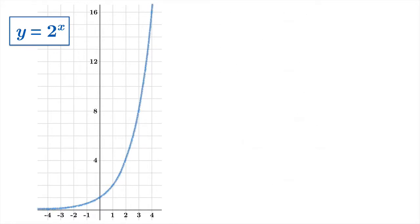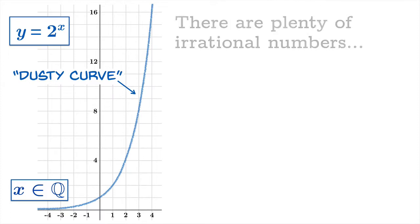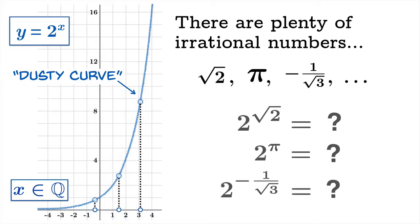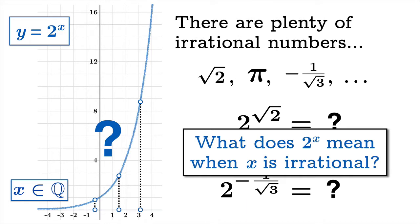If you plot a whole bunch of rational-exponent values, you get a dusty curve — there have to be holes because there are plenty of irrational numbers. Great examples are root 2, pi, and negative 1 over root 3. We don't have a definition for these yet, so we can't naively say what these things are. We really want to understand what it means to raise 2 to the x power when x is irrational — we're going to have to invoke some calculus.